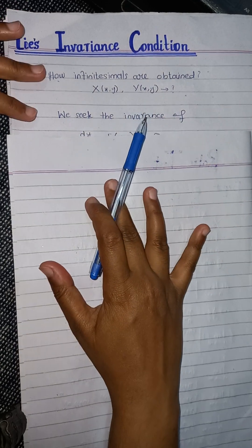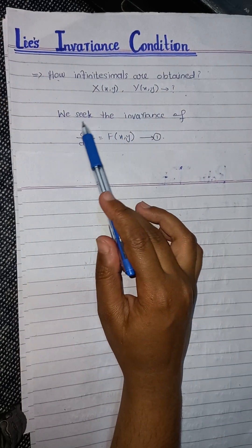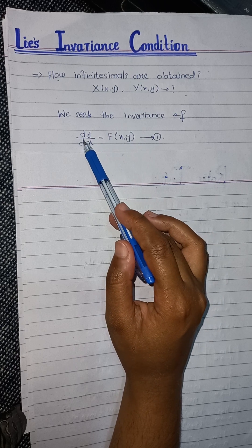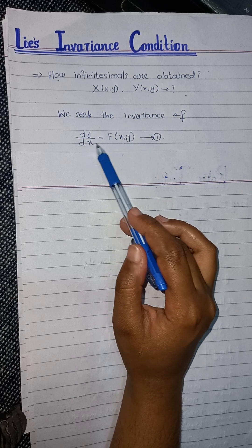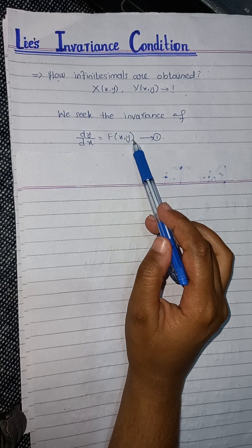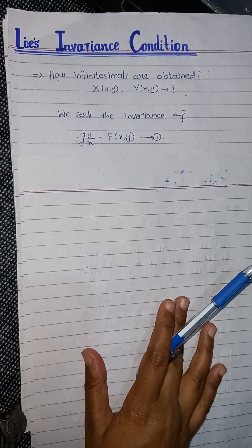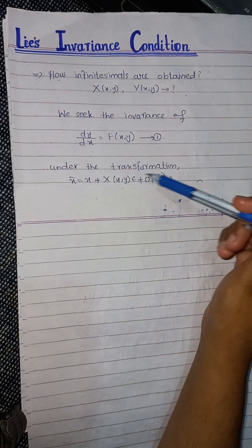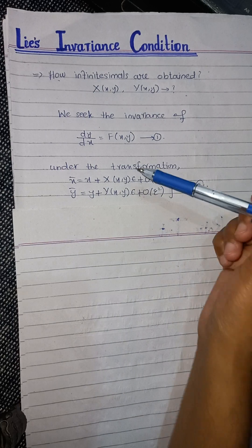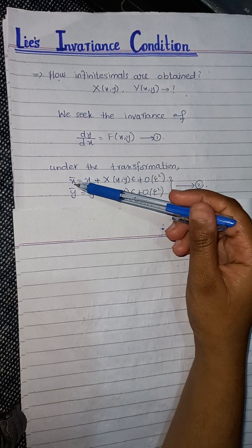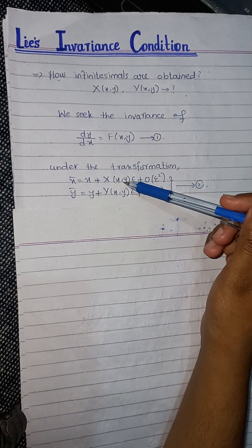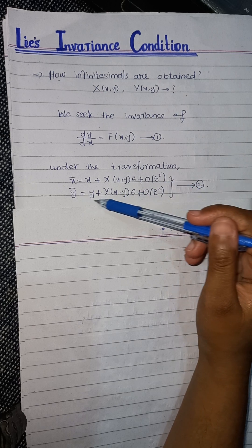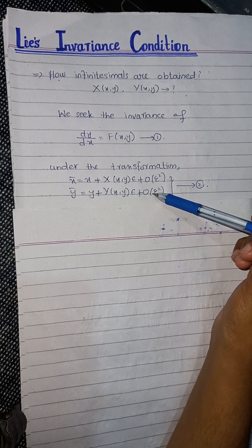We seek the invariance of this equation. This is a first order ordinary differential equation: dy/dx = F(x, y) — say this is equation number 1. Under the transformations, x̄ = x + X(x,y)·ε + O(ε²), and similarly for ȳ.